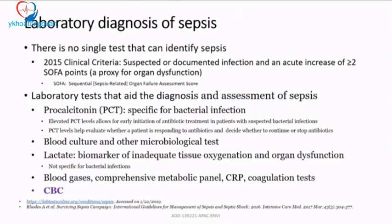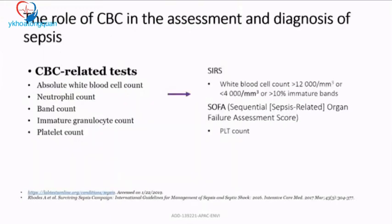Lactate is a non-specific biomarker indicating tissue oxygenation dysfunction. Blood gases, CRP, metabolic panel, and coagulation tests — such as FDP, D-dimer, or fibrinogen — are collaborative supportive tests for sepsis diagnosis. However, I want to highlight the CBC: the complete blood count, done daily for all admitted patients, sometimes twice a day, whose important parameters can guide the clinician.